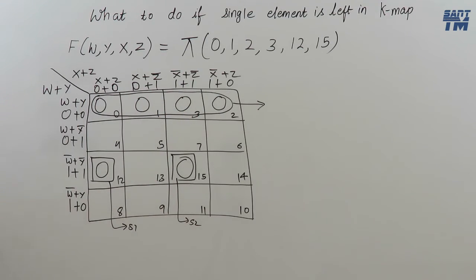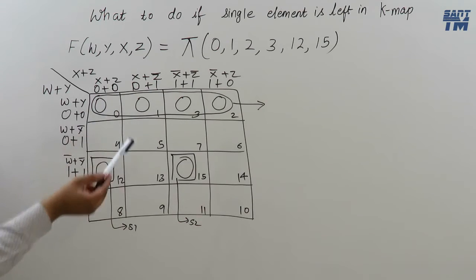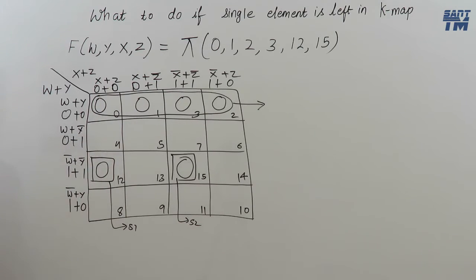In case of SOP, bar was on 0 element. In case of POS, bar is on 1 element. And in case of POS, we have to fill 0s. In case of SOP, we have to fill 1s. So, here we have filled the 0s in that places only.